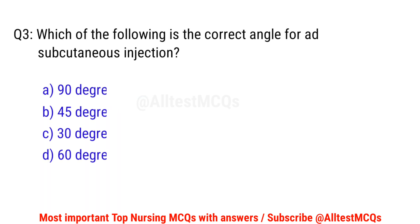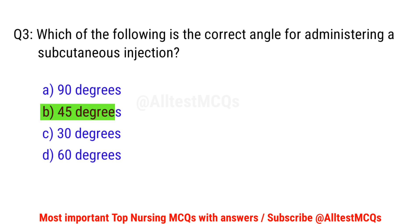Question number 3. Which of the following is the correct angle for administering a subcutaneous injection? The right option is B: 45 degrees.